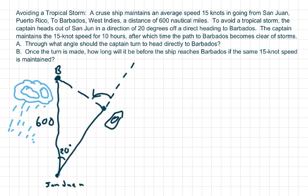Hi everyone, we're going to do a law of cosines problem. A cruise ship maintains an average speed of 15 knots going from San Juan, Puerto Rico to Barbados, West Indies. So basically, we'll just call this Barbados.